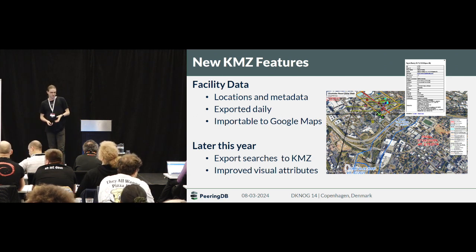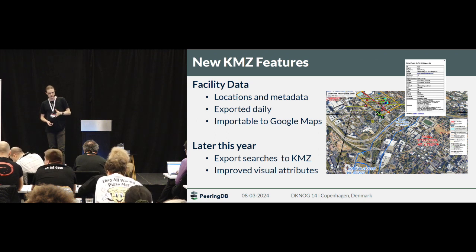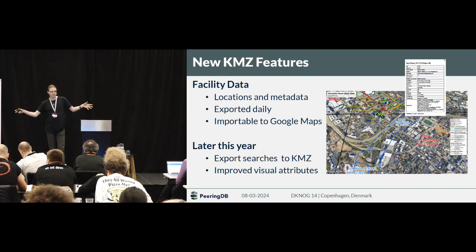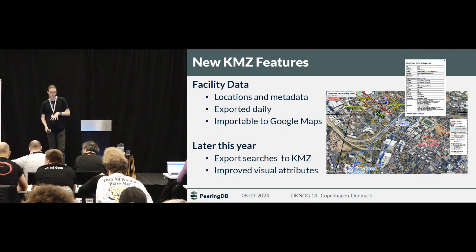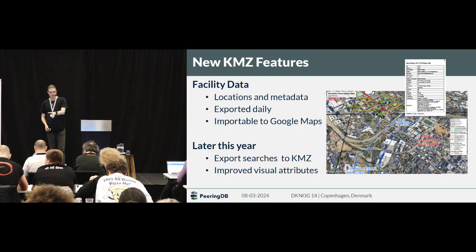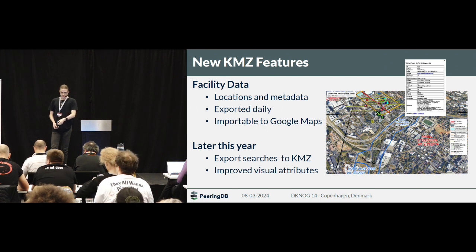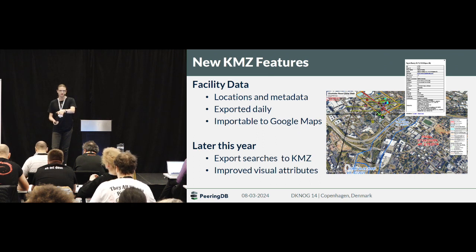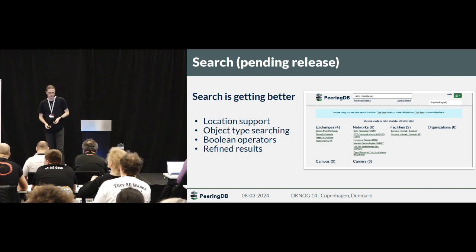We will improve the visual attributes later. At the moment you export all data centers in PeeringDB, and we're trying to add a feature so you can make a search and only export that search result. We also have Digital Realty assisting to sponsor the feature development to make the facility data quickly accessible, so you don't have to go to PeeringDB directly to access it.